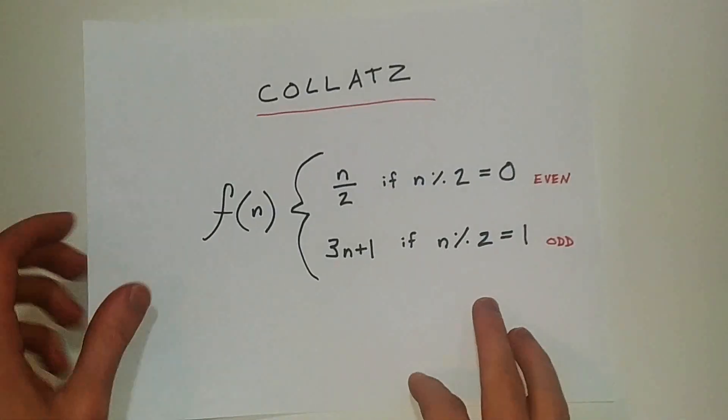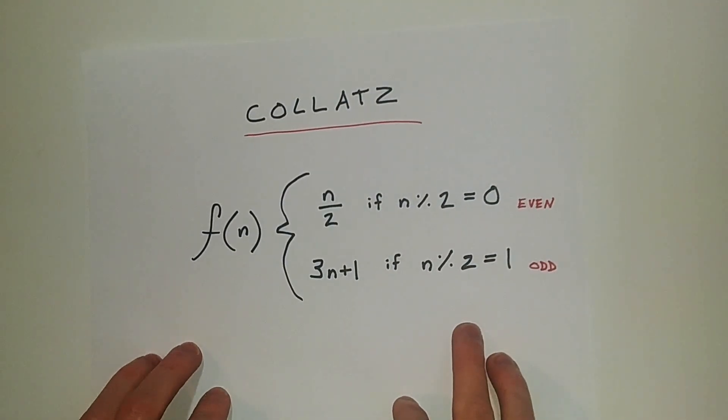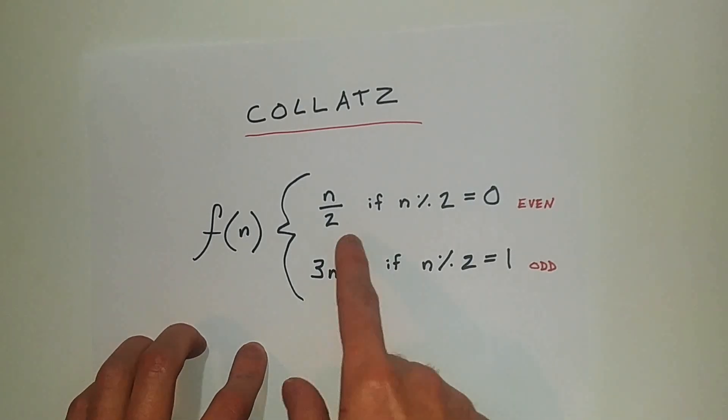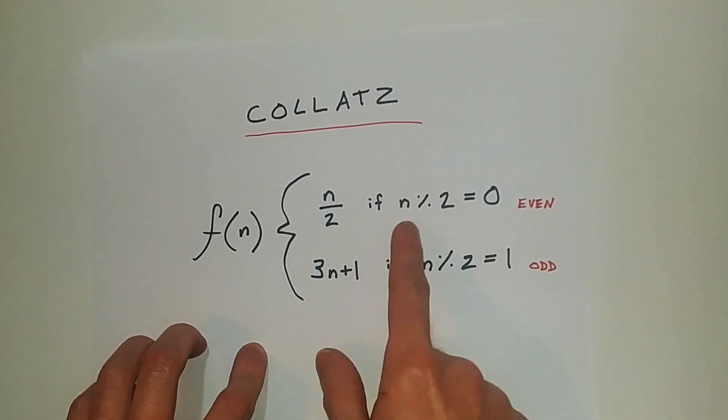Alrighty, so this is my attempted proof of the Collatz conjecture, and I'm just going to jump right into it. So the Collatz conjecture states as its process of function, if n is even, n mod 2 equals 0, I'm going to write the modulus as a percentage sign. That's what we do in JavaScript.